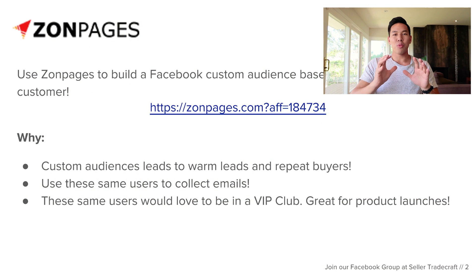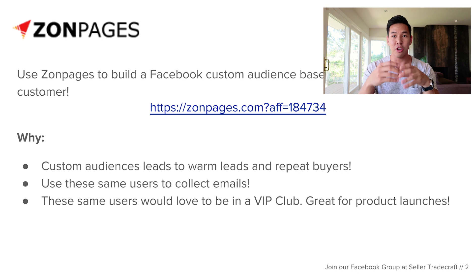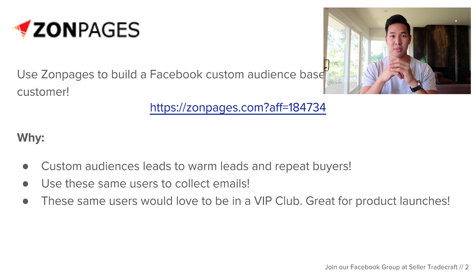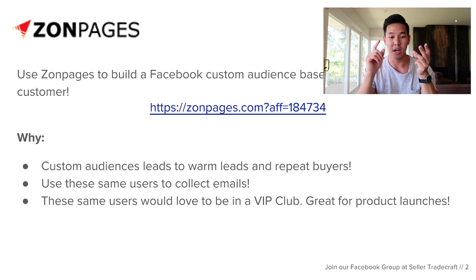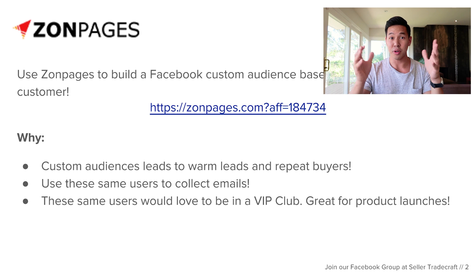Basically, what a custom audience is on Facebook — the way ZonPages will pull in a custom audience for you is they'll use your existing Amazon customers who purchased your item, and they'll create a custom audience from that for you to put into Facebook so you can run ads to them. This is super powerful because if you have a ton of customers like I do, you can retarget them to like your Facebook page, join your email list, and just expand from that. The potential is unlimited, and you're off Amazon's platform so you can do whatever you want with them.